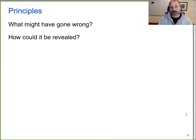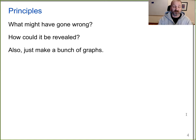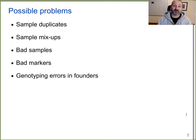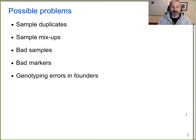In approaching this problem of cleaning data, I focus on a couple of basic principles. The main thing is to think about what might have gone wrong — what are the possible ways there could be problems in the data and how could that be revealed. And just make lots of graphs, and if you see anything weird, try to figure out what's going on. For genotype data, the kinds of problems you might have are samples being duplicated, mix-ups between samples, mislabelings, bad DNA or bad quality DNA, particular genetic markers being bad, and possibly genotype errors in the founder genotype data.